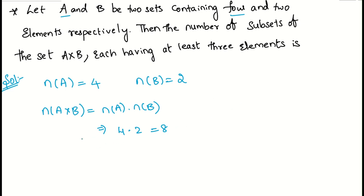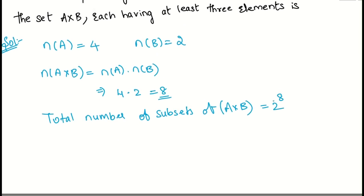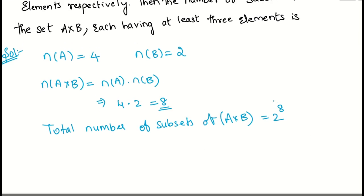Now we need to find the total number of subsets. The formula for total number of subsets is 2^n. In place of n we have 8, so 2^8 is the total number of subsets. But they are not simply asking us to find the total number of subsets.